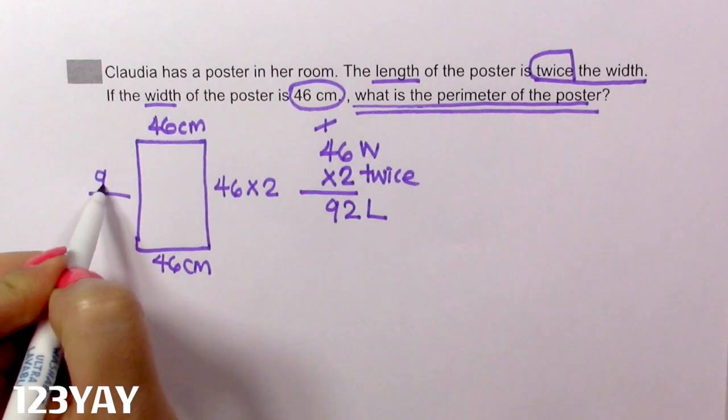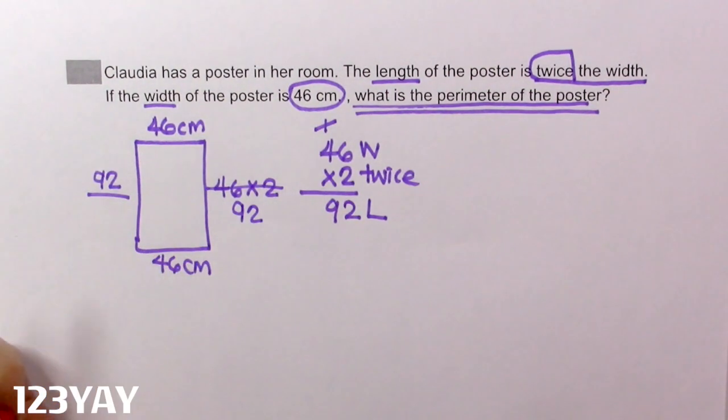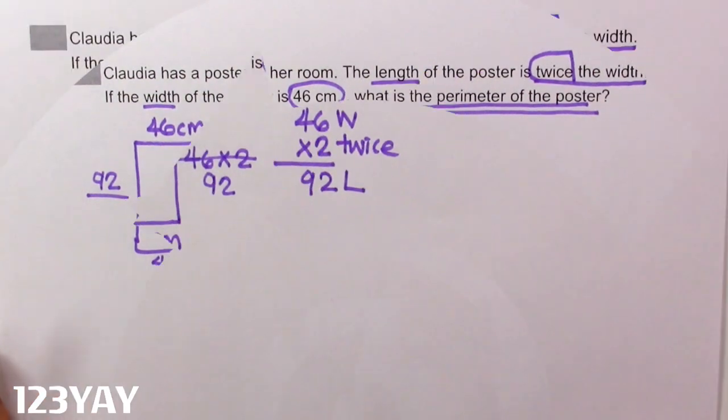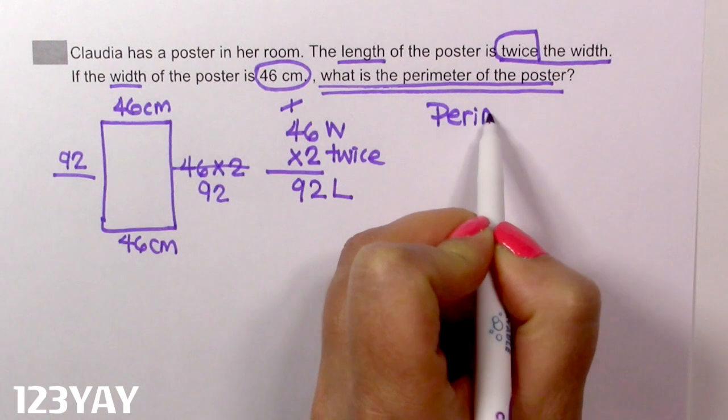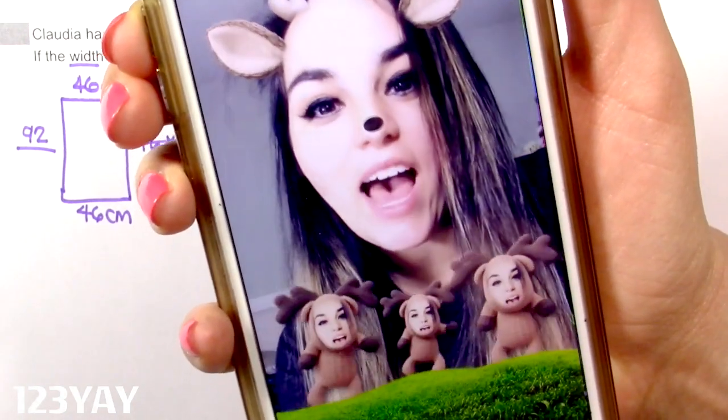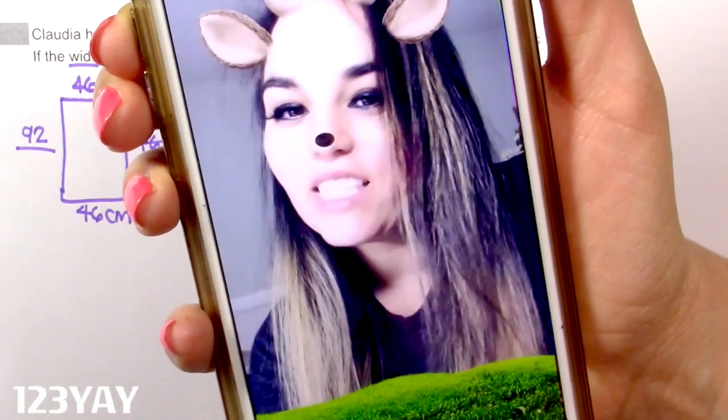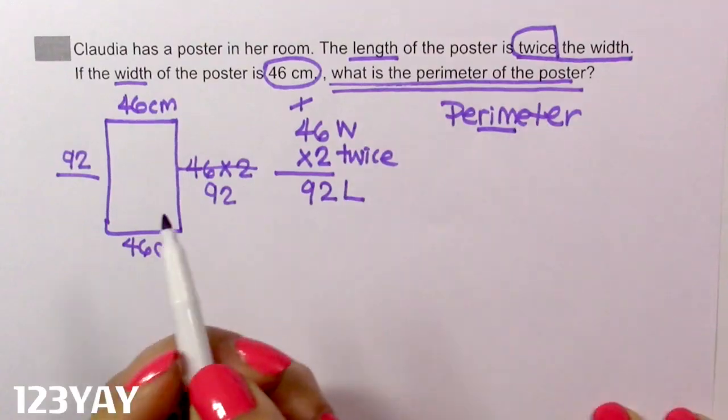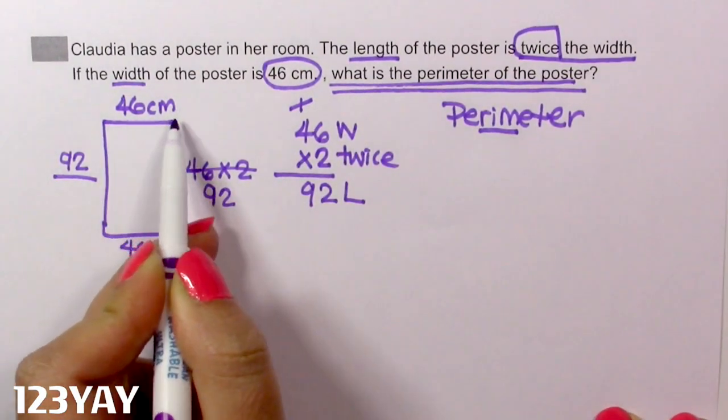Now I have 92 here and 92 here. Am I done? Now, how do we find the perimeter? Tip time, in the perimeter, you add the rim of the shape. Thank you, Brody, for giving me the tip. We have to add the rim. And the rim is all the outside of the shape.